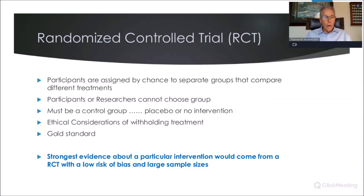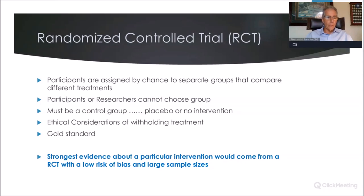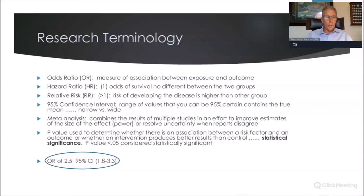Randomized controlled trials are what we want to look for. Participants are assigned by chance to separate groups comparing different treatments; you cannot choose the group, and there must be a control — either a placebo or a no-intervention group. But there are ethical considerations: when studying periodontal disease, it's ethically challenging to ask patients to not undergo treatment for a period of time to see how it impacts their systemic conditions, knowing that periodontal disease can lead to tooth loss. The strongest evidence comes from an RCT with low risk of bias and large sample sizes.